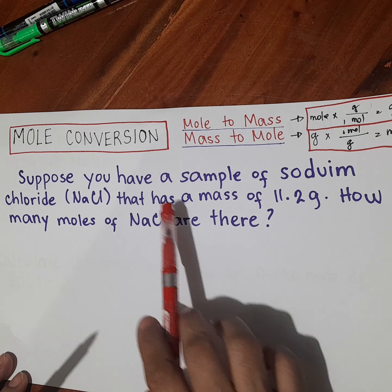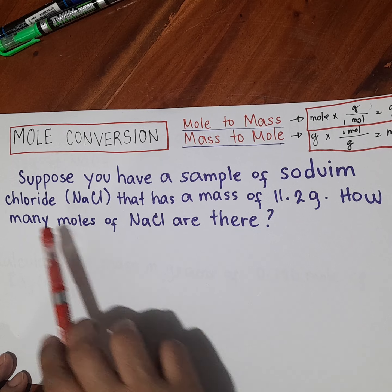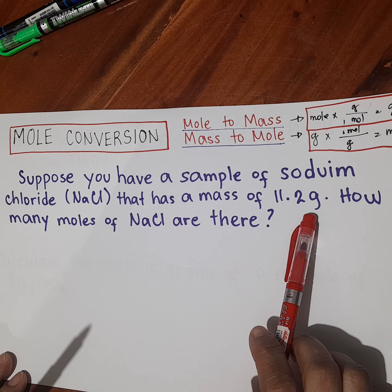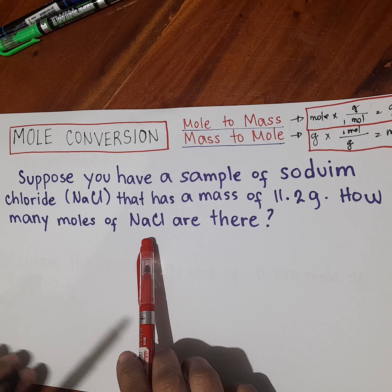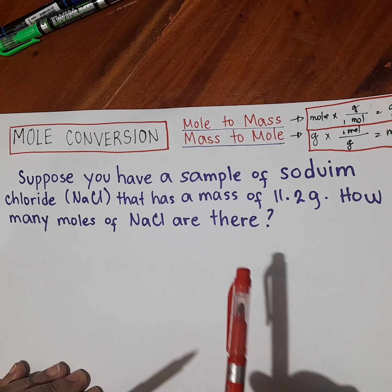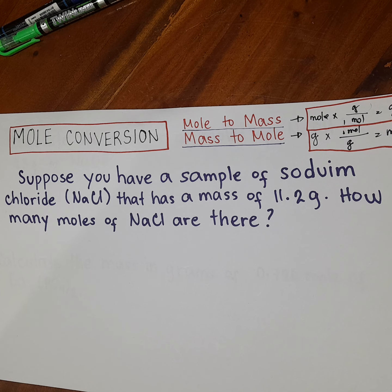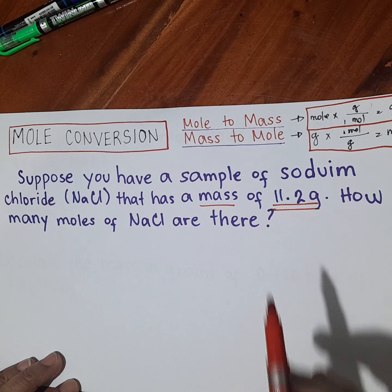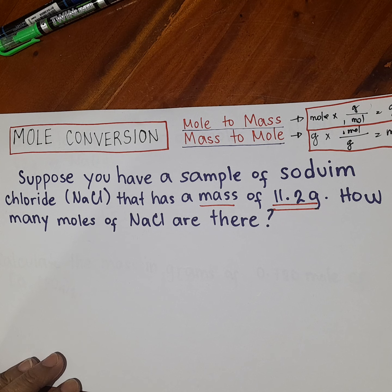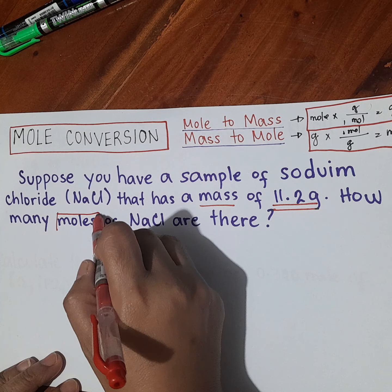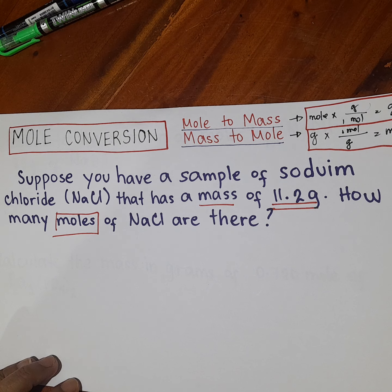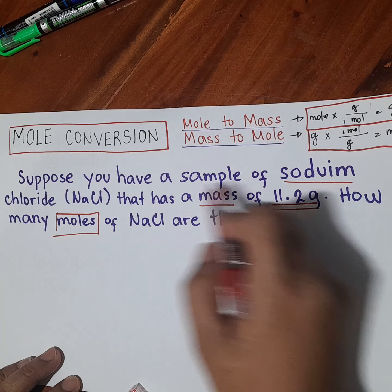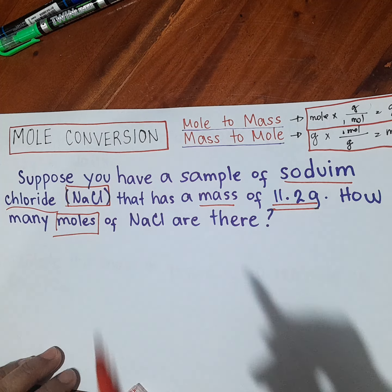Suppose you have a sample of sodium chloride or NaCl that has a mass of 11.2 grams. How many moles of sodium chloride are there? You need to identify first the given. The given is the mass which is 11.2 grams, and you are finding the mole. The compound we are using is sodium chloride, which is NaCl.